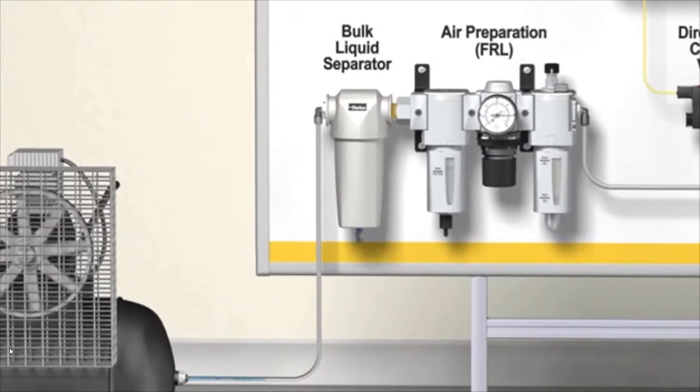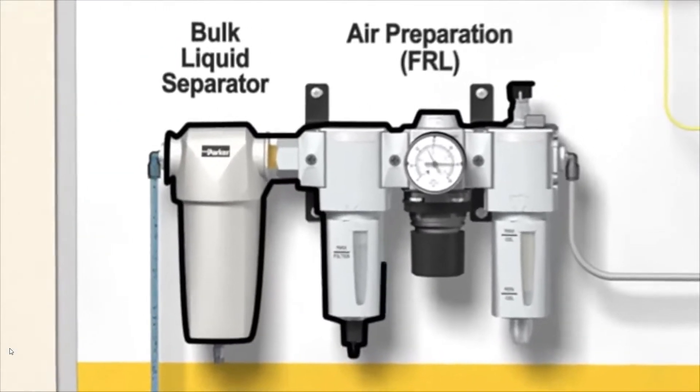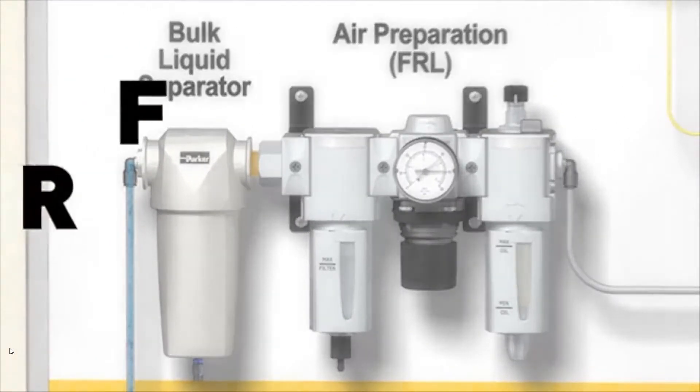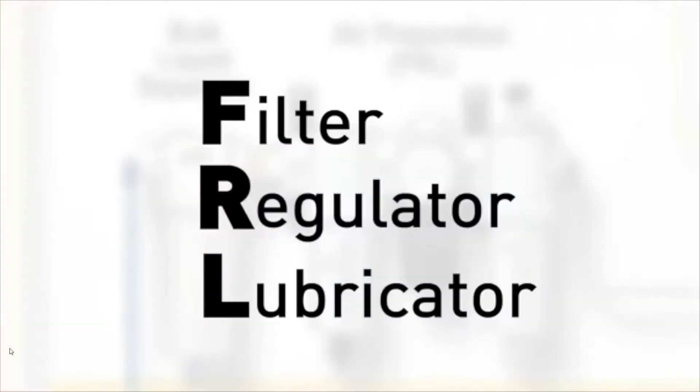The compressed air will travel through a tube or line to the next component, called an air preparation unit, or FRL. FRL is short for filter, regulator, and lubricator, which are common pieces that make up the air preparation unit.